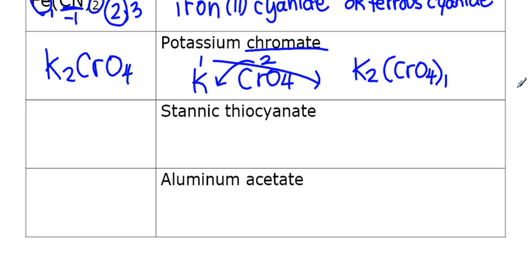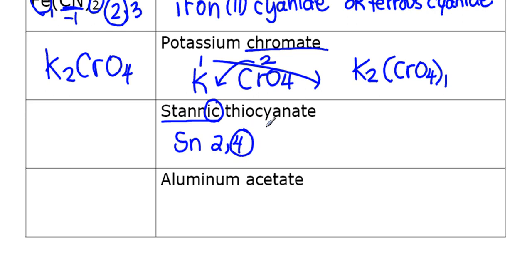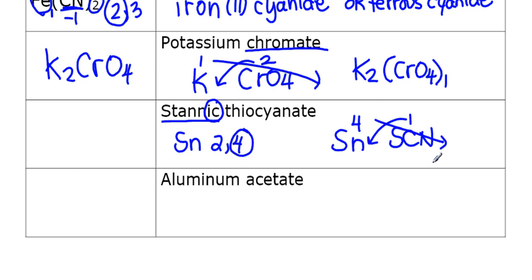When we see the term 'stannic,' it's the classical name for tin. The symbol for tin is Sn, and the periodic table shows two charges — two and four. Since the 'ic' ending means we use the larger charge, tin has a charge of four. Looking up thiocyanate on the list gives SCN with a negative one charge. Doing the crisscross, the final answer is Sn(SCN)₄ — one tin with the ion in brackets and a four on the outside.